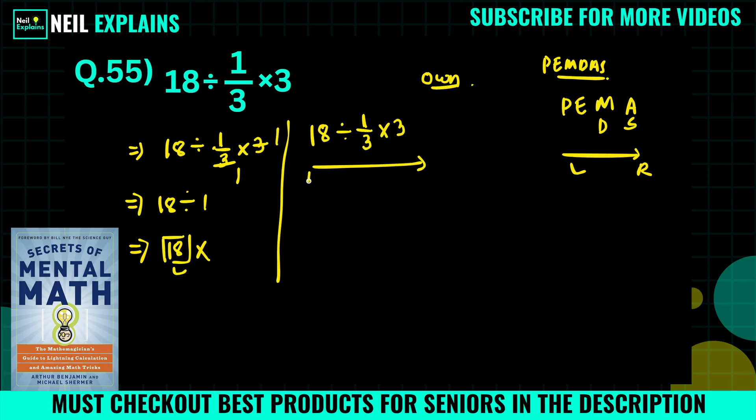And we have to operate left to right. So first we have to operate this division. And also we can see here there is a fraction, so better we will use here the KCF. Here KCF stands for Keep Change Flip. So we will keep 18 as that is, and this division will be changed to multiplication, and 1/3 will become 3/1 when we flip that, times 3.